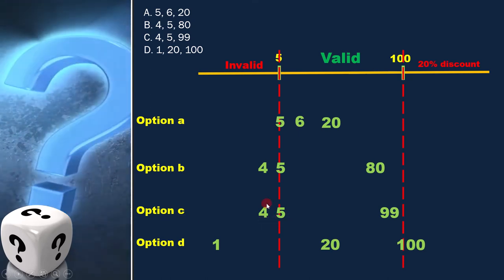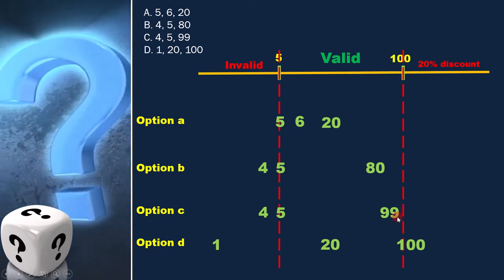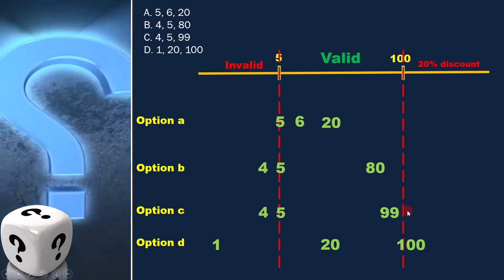In option C, 4 and 5 are at the lower boundary and 99 is at upper boundary because at 100 and above 20% discount is given.